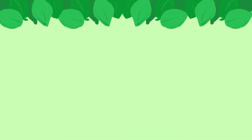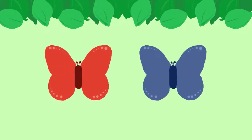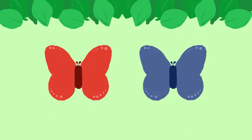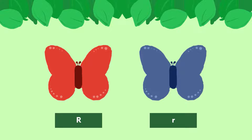In order to understand this better, let's use the example of a butterfly species. Let's say a species of butterflies comes in two possible colors: red and blue. The red color is dominant to the blue color, which is recessive.